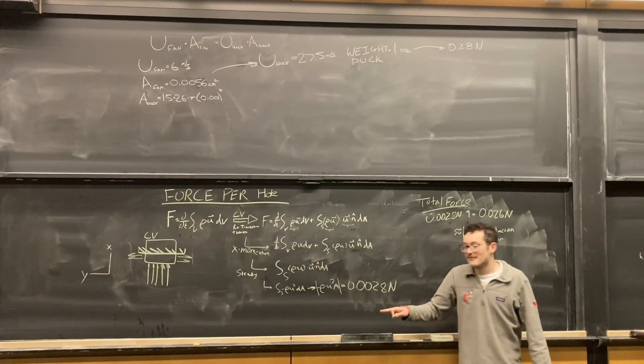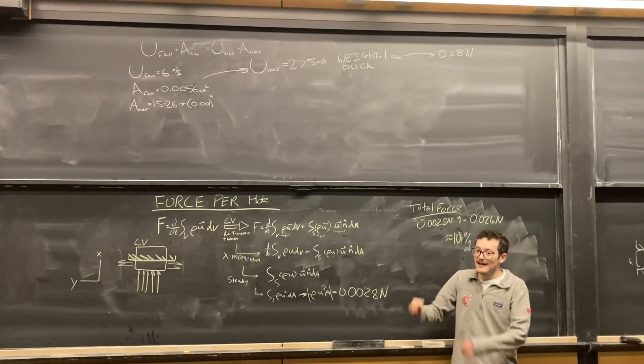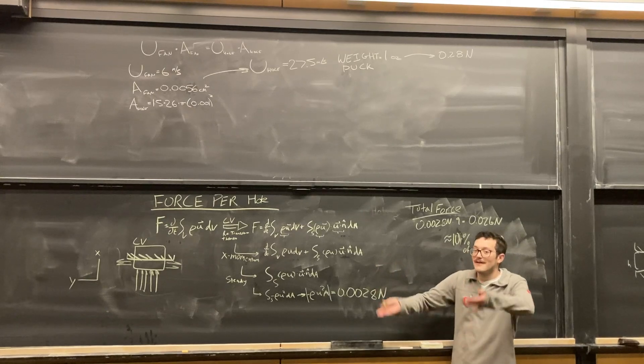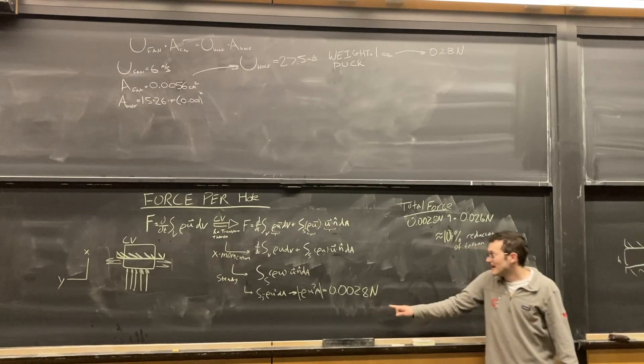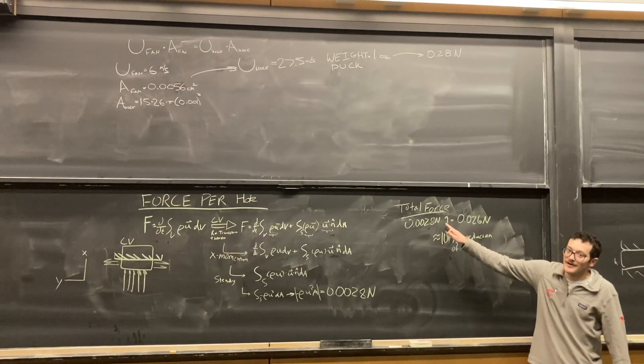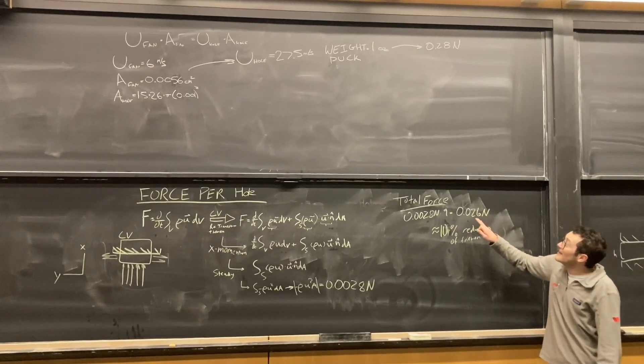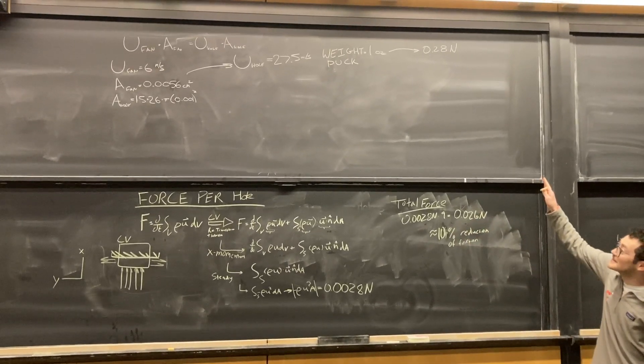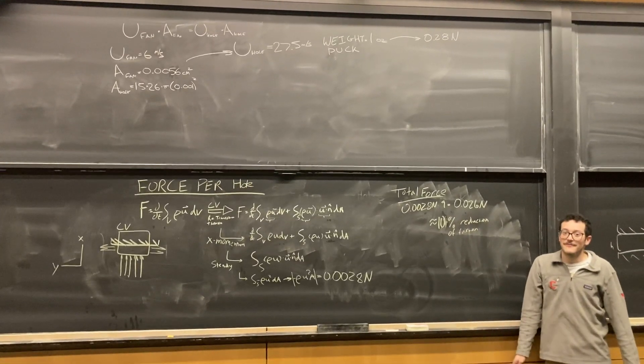The u we use is found from conservation of mass by using the speed on the other side of the fan and the total amount of fluid that would be coming out of the holes. We got 0.0028 newtons. Multiplying this by 9 since we're assuming that the puck covers 9 holes, we get 0.026 newtons. By the weight of the puck, we assume that would probably be about 10 percent of reduction of the pressure.